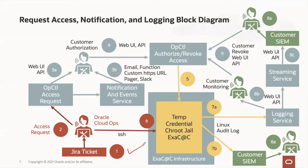Step one: some business process will create a Jira ticket for an Oracle operator. Our Oracle operator's unit of work is the Jira ticket. The methods by which we create Jira tickets are typically event triggers that happen automatically in the infrastructure, such as a fan speed or a process failure, or a customer SR can generate an event that will create a Jira ticket. Our Jira ticket is assigned to a person at Oracle.